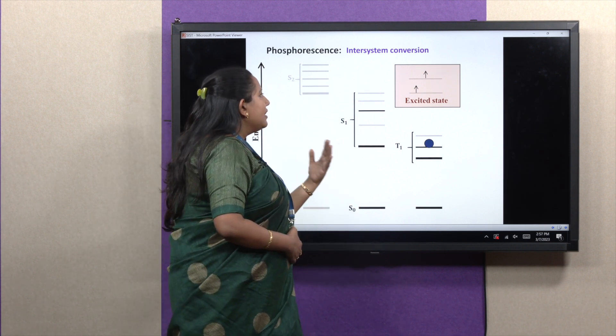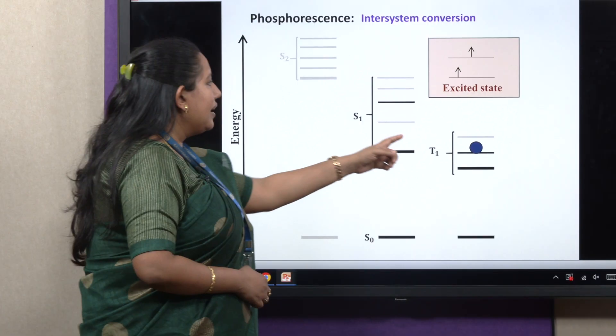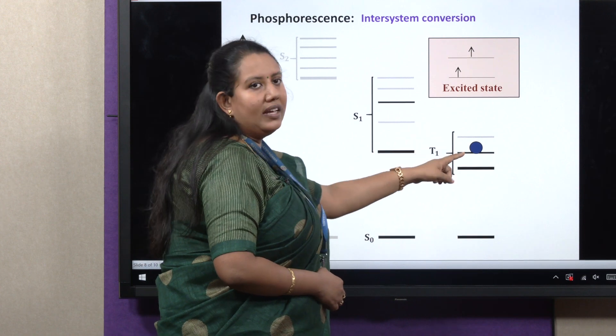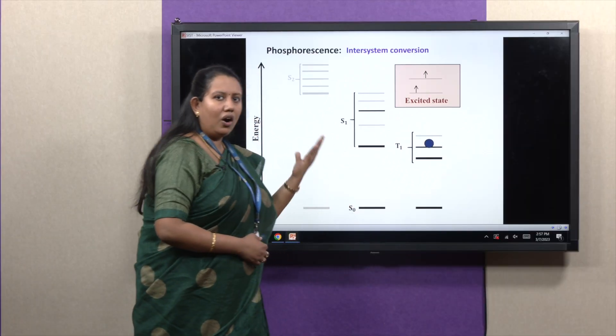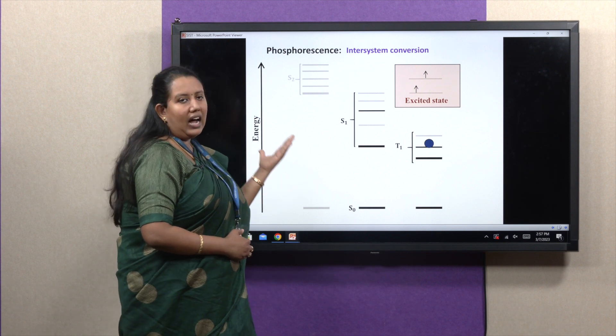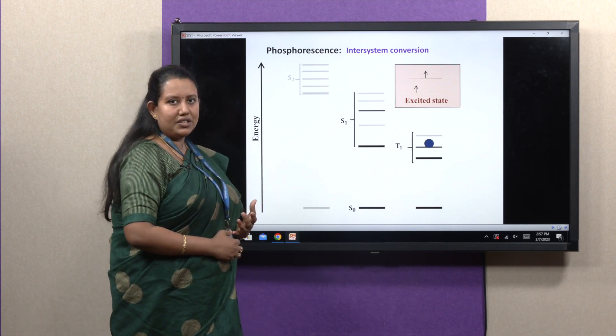then this will not be a permitted process. It is a forbidden process because here spin flipping is occurring. That is why it is taking longer time comparatively to other non-radiative decay channels like internal conversion.